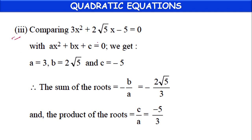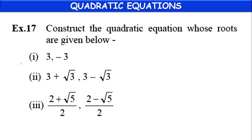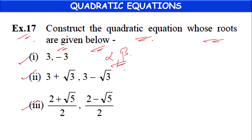The third equation is in the same model — the solution is there, and later you can do it as homework. Next, Example 17: construct a quadratic equation whose roots are given below. They have given alpha and beta values; we have to construct the equation. First, by finding their sum and product, we have to find the quadratic equation.